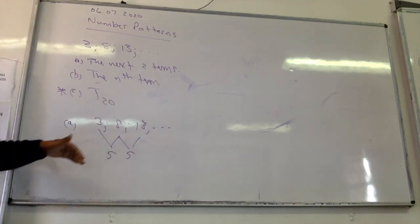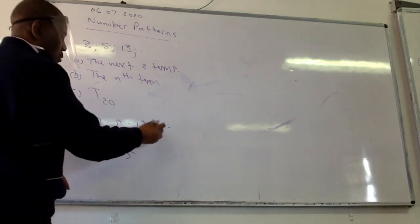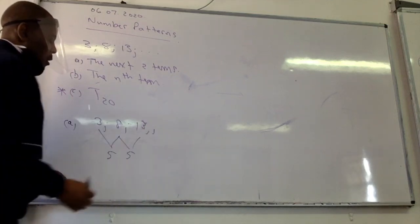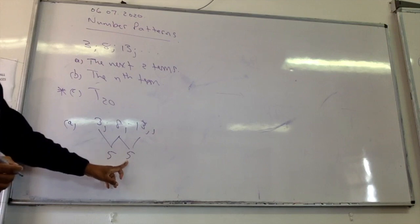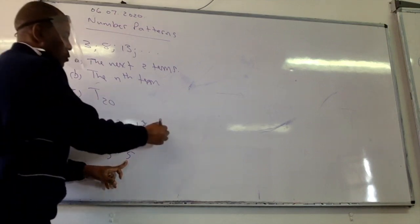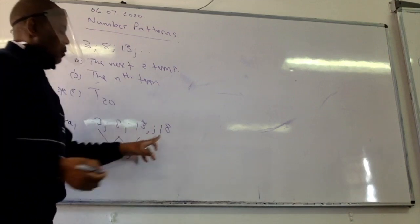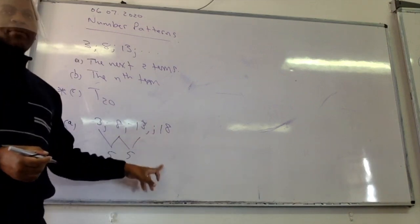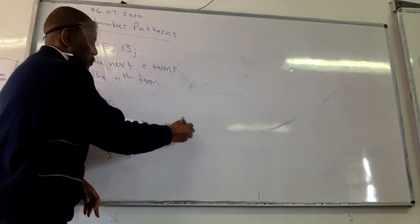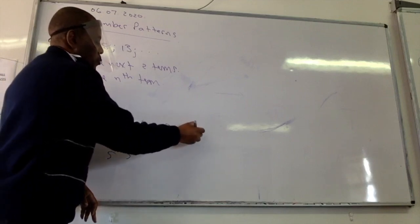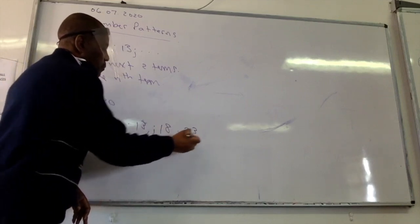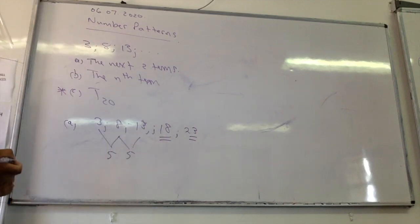To get the next one, the next one will be 13 plus 5, which is equal to 18. And obviously after 18, what do you do to get the next one? You say 18 plus 5 again and you get 20. Okay, so these are the next two terms of this number pattern.